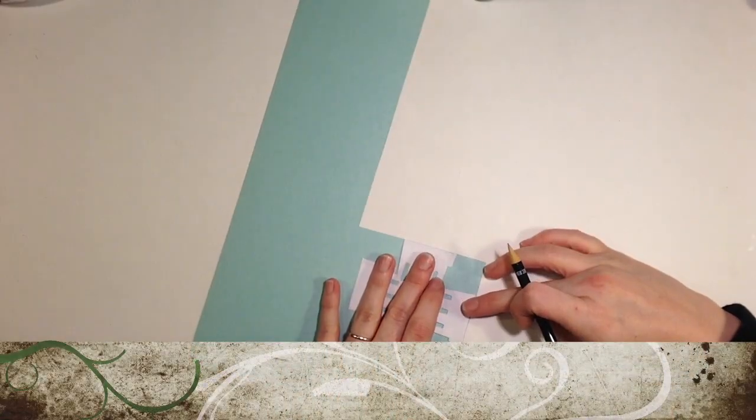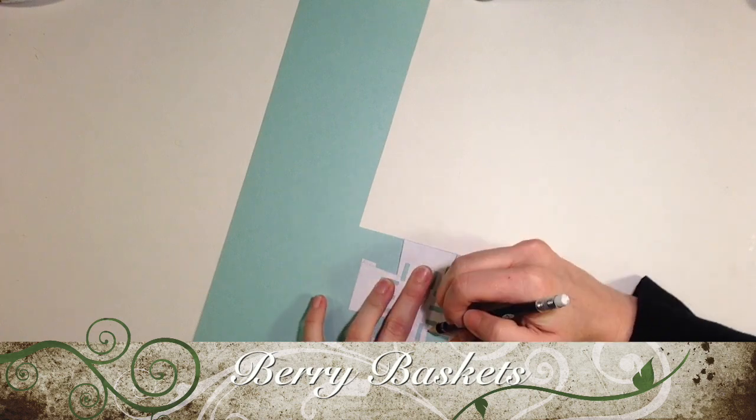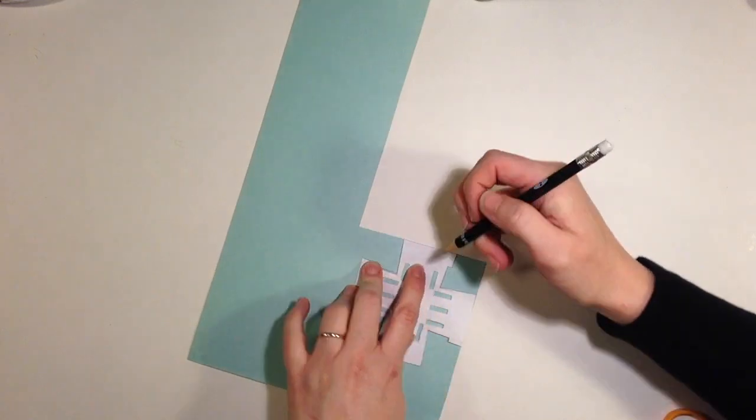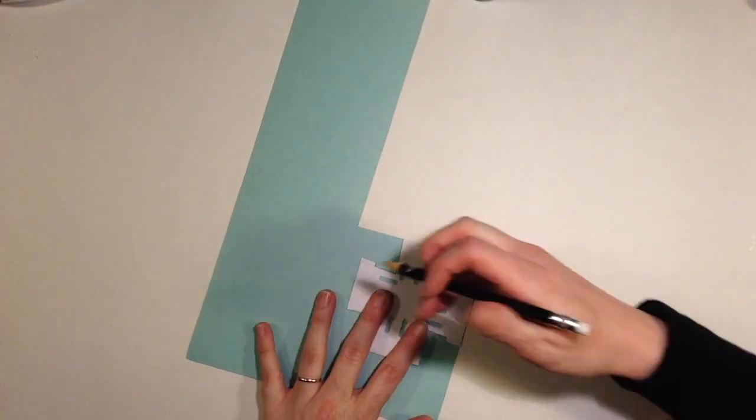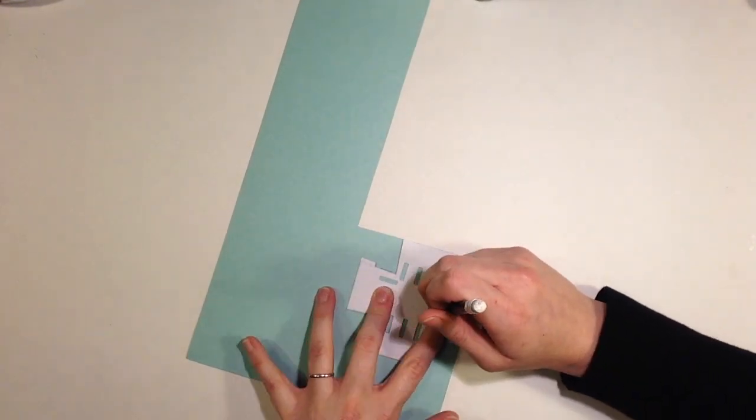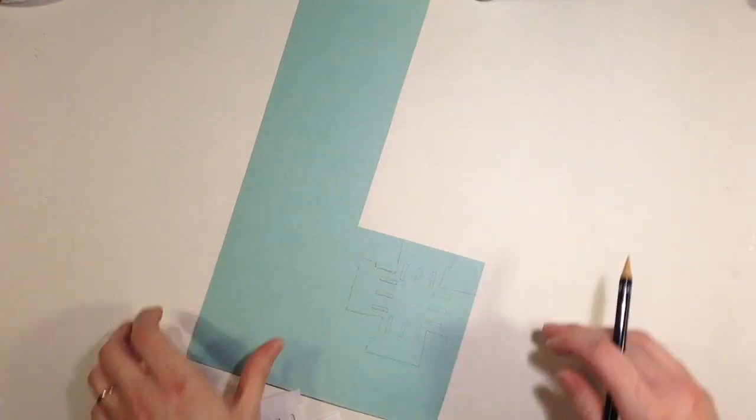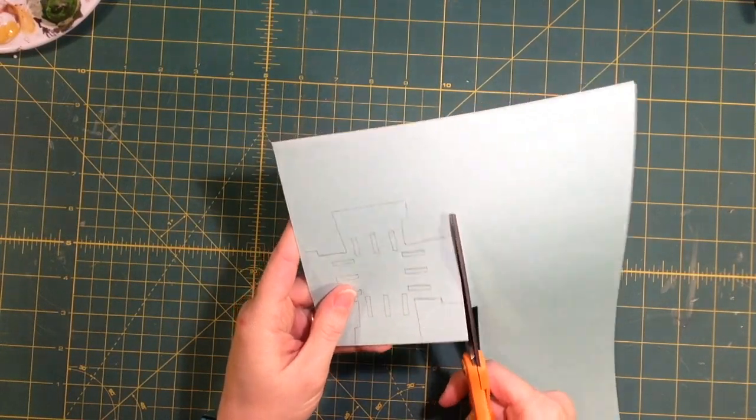To make the berry baskets you'll need some cardstock and the template from my blog. The link is in the description below. You're going to either print the template directly onto the paper you're using or you'll have to make a stencil and trace it like I'm doing onto your paper.